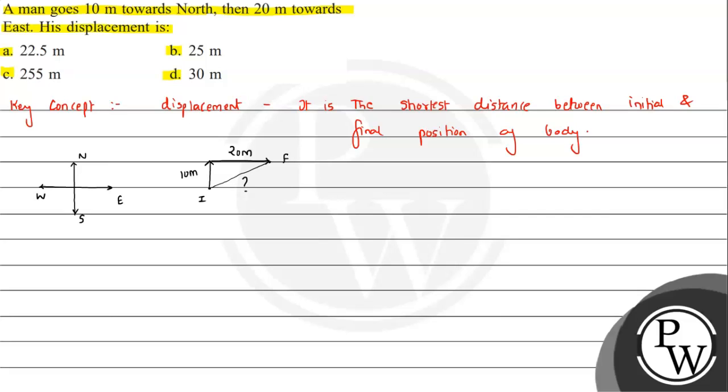Here we can simply apply Pythagorean theorem since this angle is 90 degrees. Let's suppose this is called IF. So what we can write is: IF squared will be equal to IM squared plus MF squared, which means IF squared equals 20 squared, that is 400, plus 10 squared, that is 100.